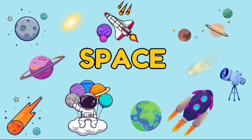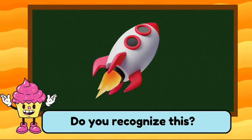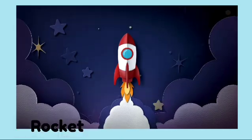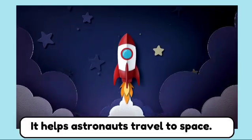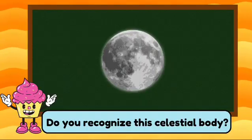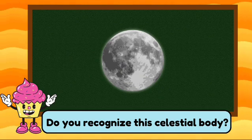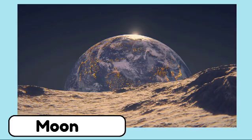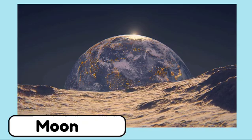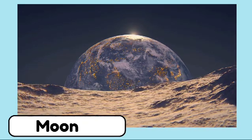Space vocabulary. Do you recognize this? This is a rocket. It helps astronauts travel to space. Do you recognize this celestial body? This is the moon. It looks bright and round in the night sky.